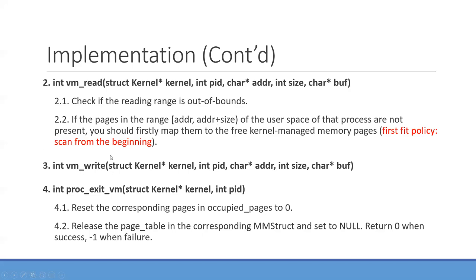Once the mapping is built, we can really access the memory in the kernel space. The write function is similar. The exit function is used to terminate one process. First, reset the corresponding pages in 'occupied_pages' to 0 — the pages for this process are set to free. Then release the page table in the mm_struct and set it to null. Return 0 on success. In this way, we can safely exit one process.